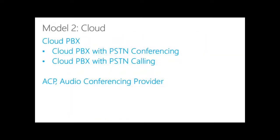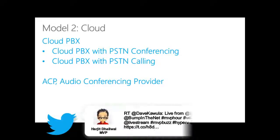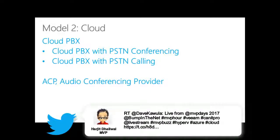The second model that's becoming really popular is cloud, hosted by Microsoft. They have two levels of functionality: PSTN conferencing, which takes your dial-in conferencing and allows people globally to dial into your meetings, and PSTN calling, where Microsoft becomes your phone company. There's also a third option called ACP — audio conferencing provider — which is fading away because with Microsoft PSTN conferencing, third-party providers aren't really needed as much anymore, though they're still used for better rates or coverage in certain countries.